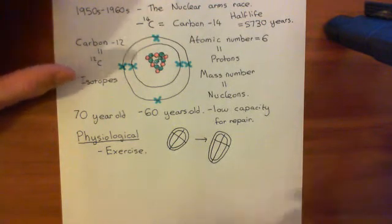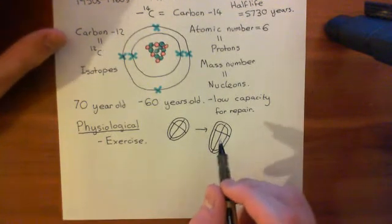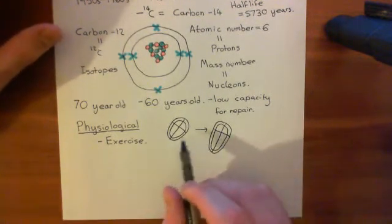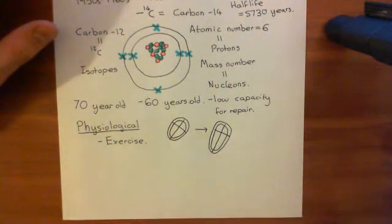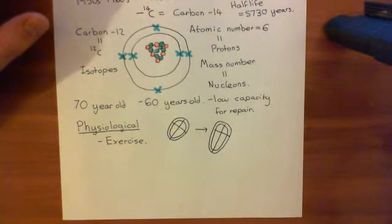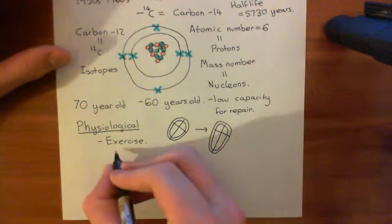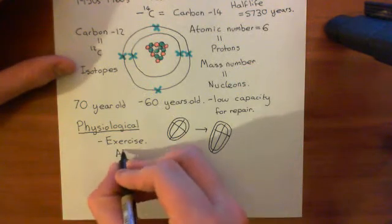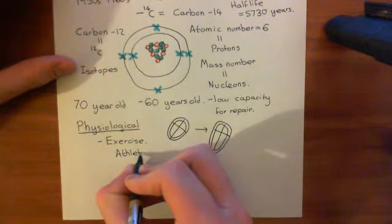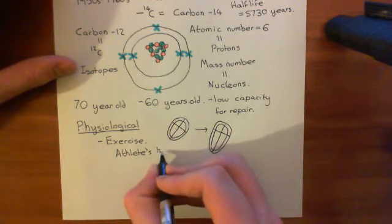If you exercise regularly, your heart can grow up to about 60% of the size of an adult who doesn't do regular exercise. Some world-class athletes will have hearts that are 60% bigger than those of non-athletes. This physiological hypertrophy in response to exercise is known as athlete's heart.